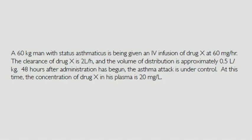Now we're ready to tackle the end-of-session quiz, which focuses entirely on calculations with our four pharmacokinetic equations. All questions deal with this situation: a 60-kilogram man with status asthmaticus is being given an IV infusion of drug X at 60 mg/hour. The clearance of drug X is 2 liters per hour, and the volume of distribution is approximately 0.5 liters per kilogram. 48 hours after administration began, the asthma attack is under control, and the concentration of drug X in his plasma is 20 mg/liter.